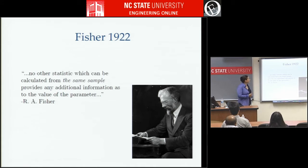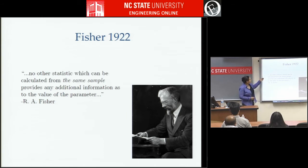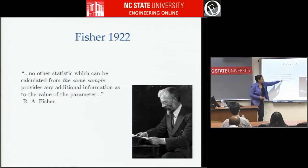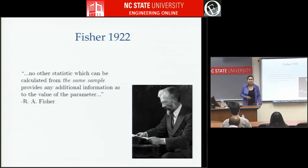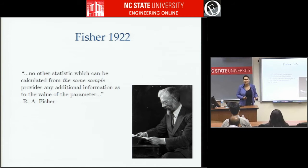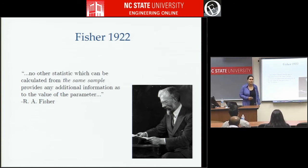Fisher in 1922, with his sufficient statistics theory, showed that you can't really do any better — if you're calculating a statistic from the same sample, you're not going to get any additional information beyond the mean. This really seemed to be the end of what we needed to study, as it says the mean is exactly what it is and there's not much more to say.